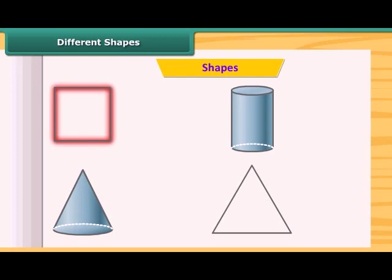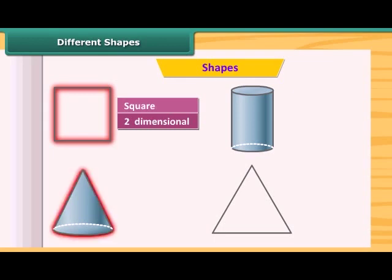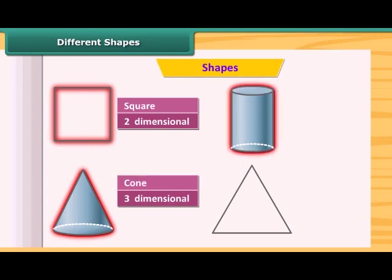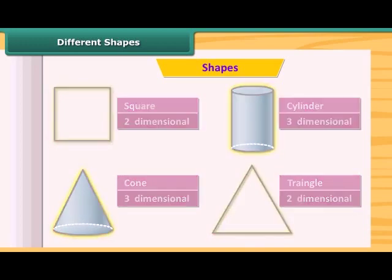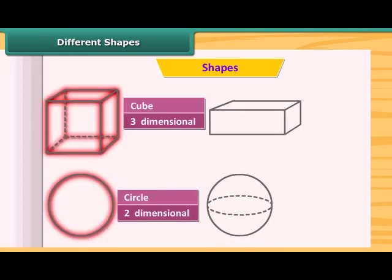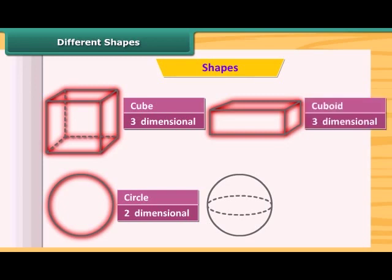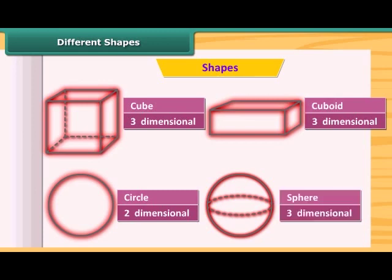This is square and this is two-dimensional. This is a cone and is three-dimensional. This is a cylinder. This is also three-dimensional. This is a triangle and this is two-dimensional. Circle, two-dimensional. This is a cuboid and is three-dimensional. And this is, is it a sphere? Yes, this is a sphere and is three-dimensional.